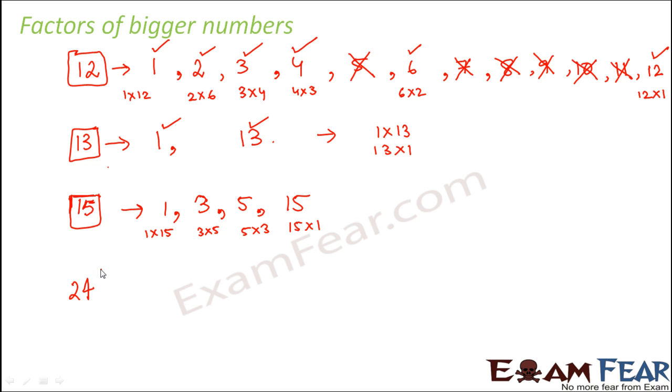Let's talk about another number like 24. So for 24 again, we have a lot of factors. Like 1 is a factor, 2 is also a factor because 2 into 12 is 24, 3 is also a factor because 3 into 8 is 24, 4 is also a factor because 4 into 6 is 24.